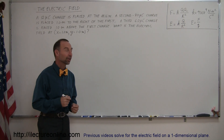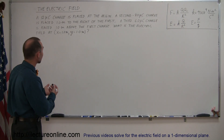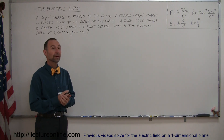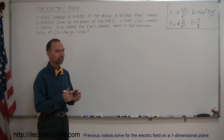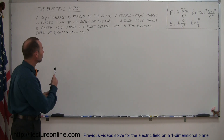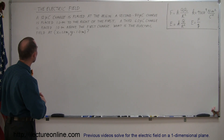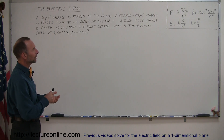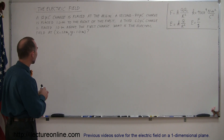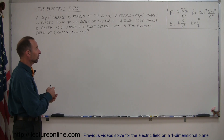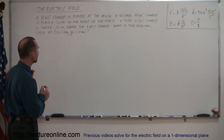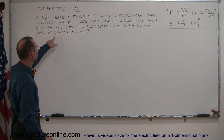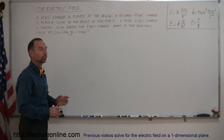Welcome to iLecture Online. Here's another example of how to work problems dealing with electric field. This time we're going to look at something a little bit more complicated. We have multiple charges, not on a straight line, so this is a two-dimensional problem. We have a 12 microcoulomb charge placed at the origin, a second minus 8 microcoulomb charge placed one meter to the right, and a third 6 microcoulomb charge placed one meter above the first charge. What is the electric field at x equals one meter, y equals one meter?